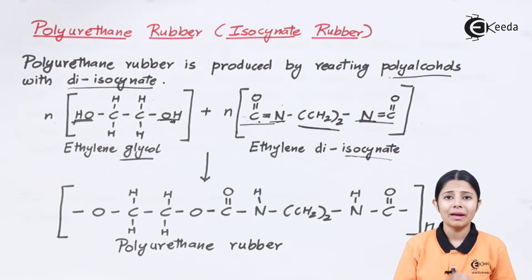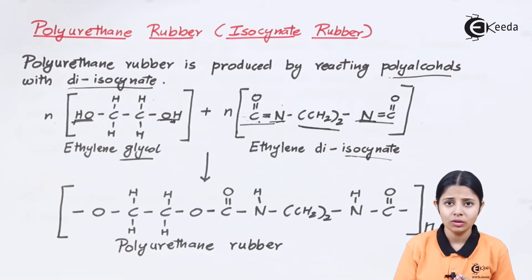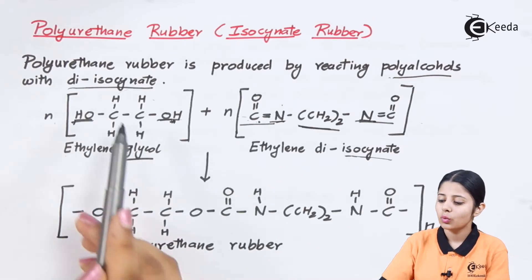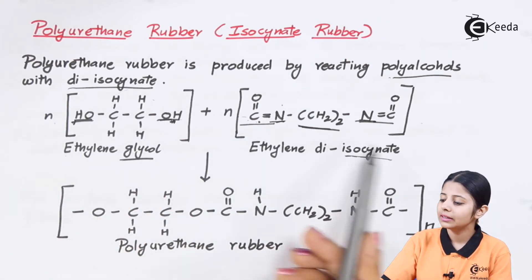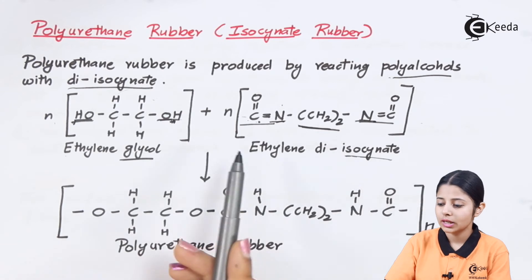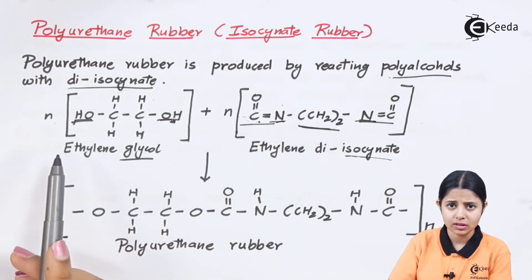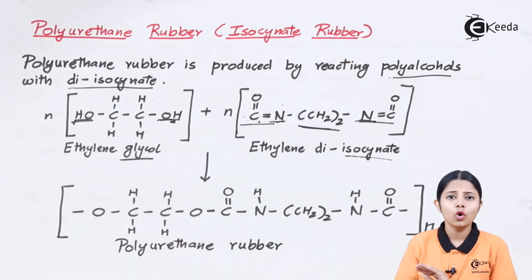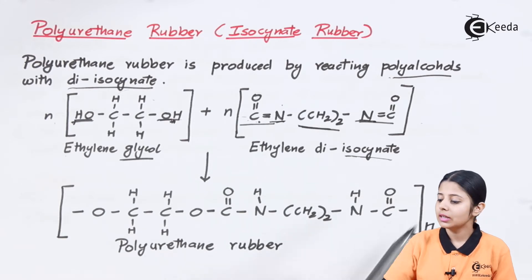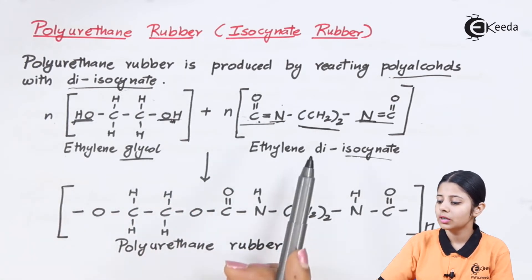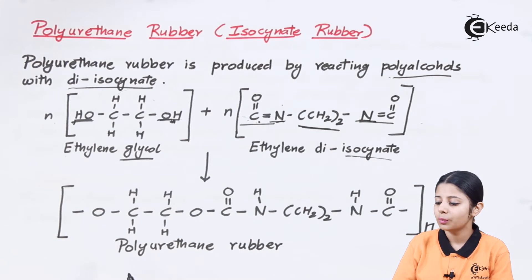The term addition is used here because there is addition of two monomers — ethylene glycol and ethylene diisocyanate — with no byproduct forming. That type of reaction is known as an addition reaction. This addition of two monomers has led to the polymerization of polyurethane rubber.